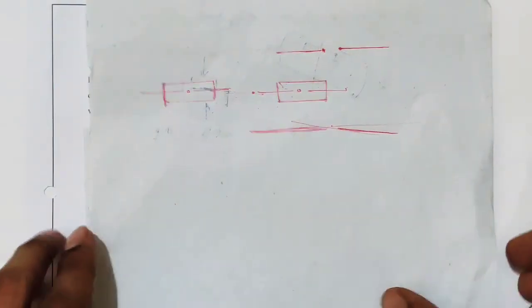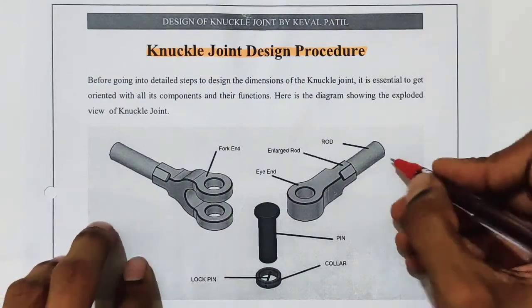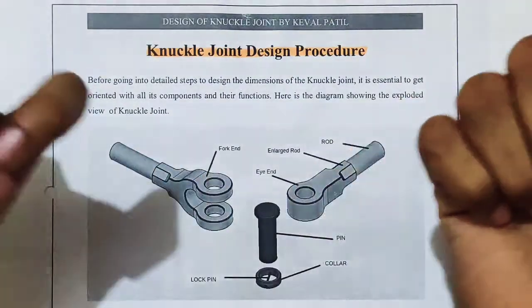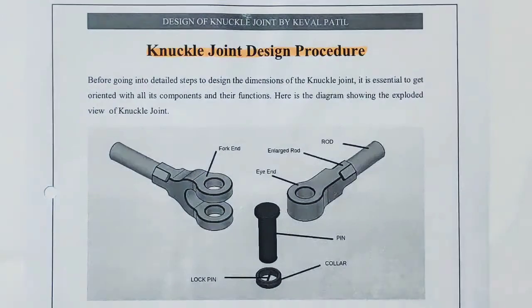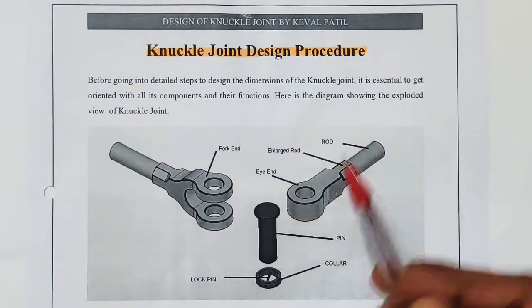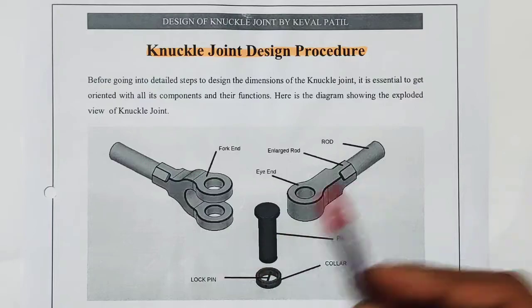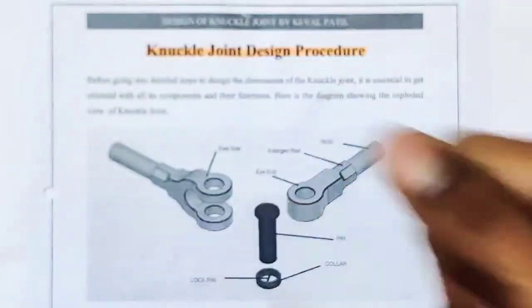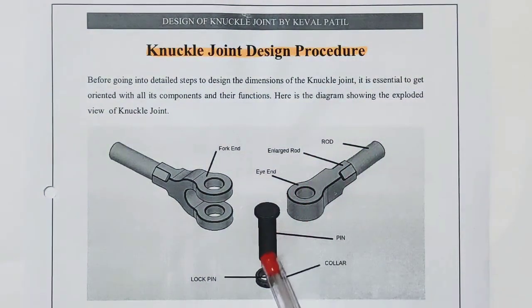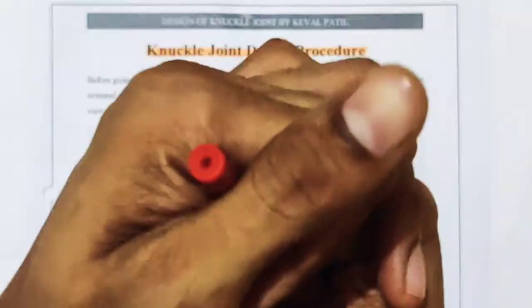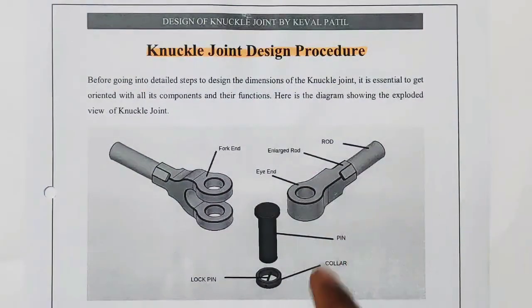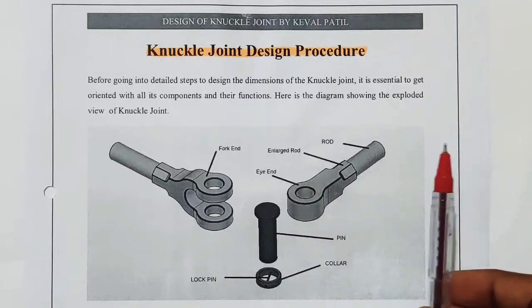The knuckle joint is used to transmit axial tensile force from both sides. The pin has a circular cross-section, which means the two joints can rotate because of this circular shape, whereas the cotter has a wedge shape where the two joints cannot rotate. The knuckle joint is not used to transmit torque or power — for power transmission we use devices like couplings.